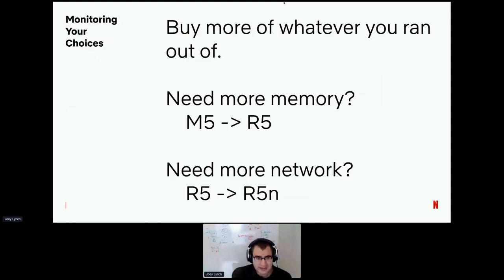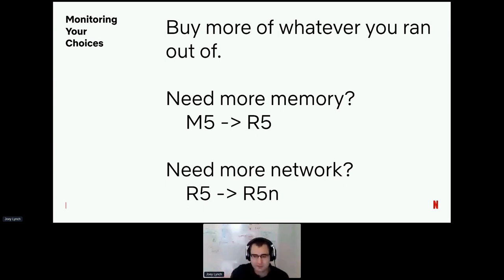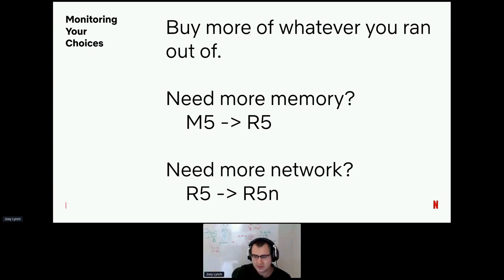You can develop a simple algorithm for monitoring your choices: just buy more of whatever you ran out of. If you're on M5 instances and need more memory, switch to R5s. If you need more network, go to the EN flavor. Most cloud providers offer different shapes that optimize for one resource, and usually you're only running out of one. If you're running out of multiple resources, you have to scale up and double. The Netflix Cassandra model does doubling because we still do single tokens — but with virtual nodes you could incrementally scale and wouldn't need those 48-node or 96-node jumps.